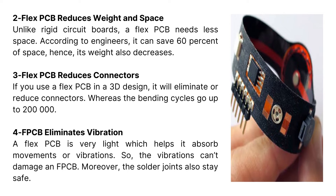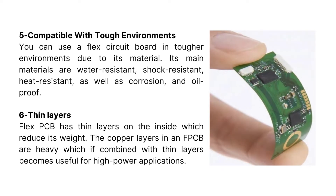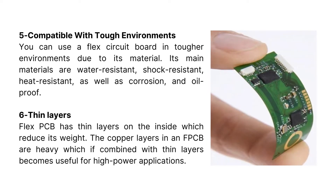Four, FPCB eliminates vibration. A flex PCB is very light, which helps it absorb movements or vibrations, so the vibrations can't damage an FPCB. Moreover, the solder joints also stay safe. Five, compatible with tough environments. You can use a flex circuit board in tougher environments due to its material. Its main materials are water-resistant, shock-resistant, heat-resistant, as well as corrosion and oil-proof.